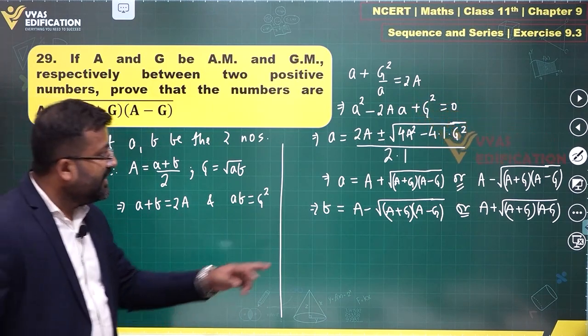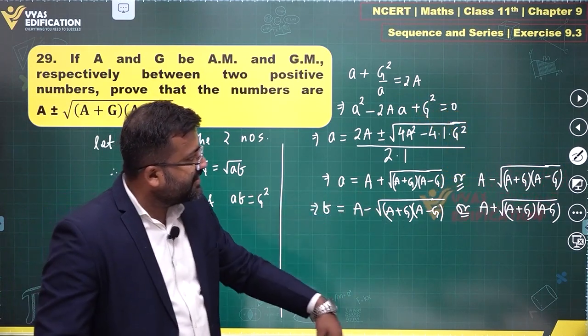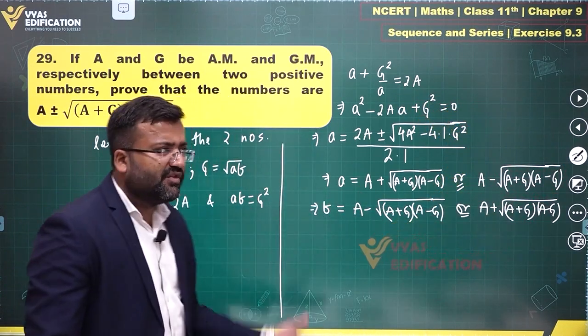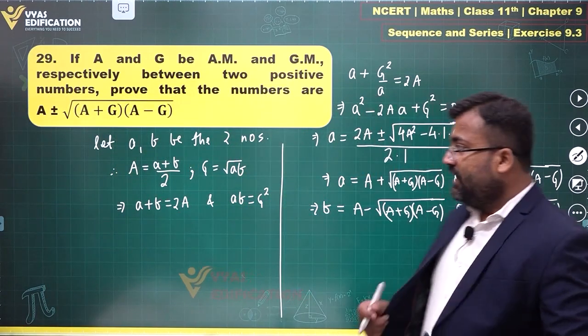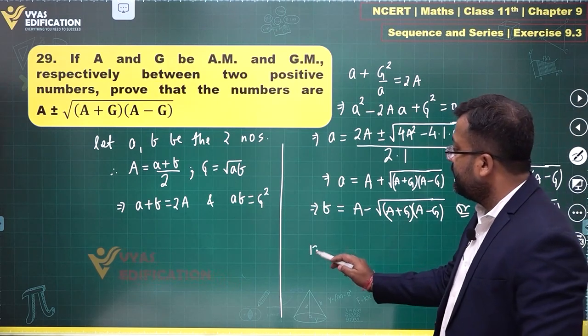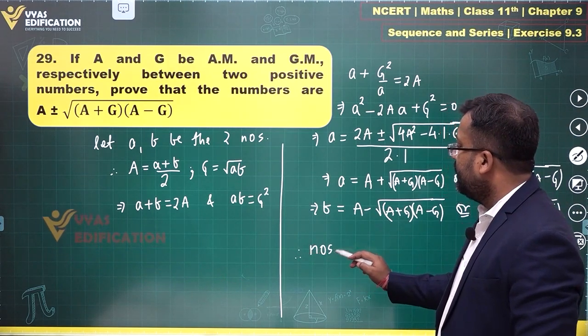You can observe the numbers will be A ± √((A+G)(A-G)), which is what we wanted to prove. Therefore, the numbers will be